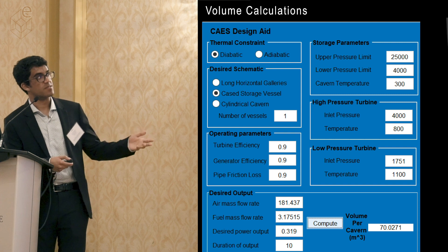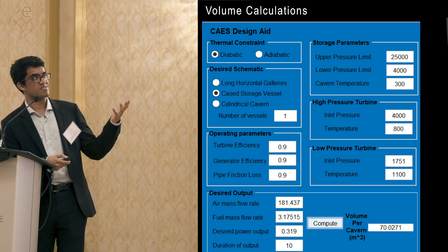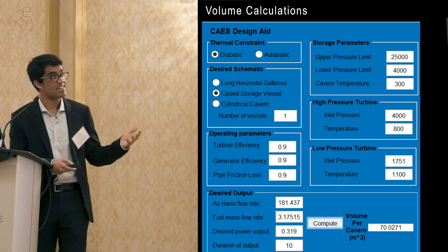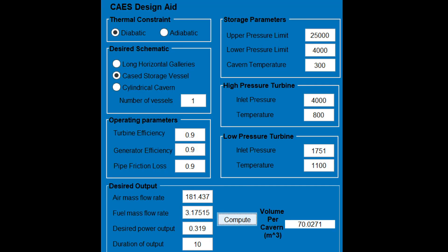The bulk of my research has led me to a volume calculator — and it's funny how four months of research shows up on one slide. This calculator computes a volume for your desired power output in megawatts and duration, giving a megawatt-hour figure. It takes into account thermal constraints — diabatic versus adiabatic — the desired cavern schematic (horizontal gallery, vertical cylindrical cavern, or storage vessel), upper and lower pressure limits, temperature, and turbine efficiencies, producing the required volume.